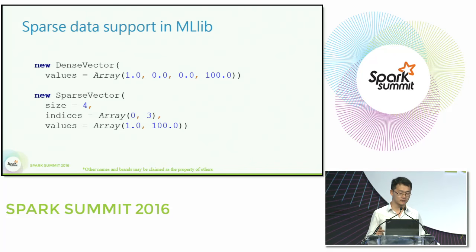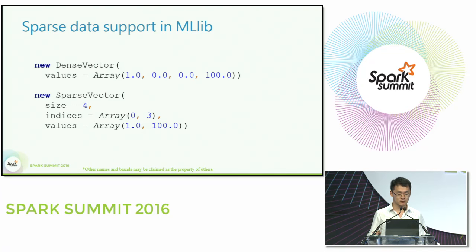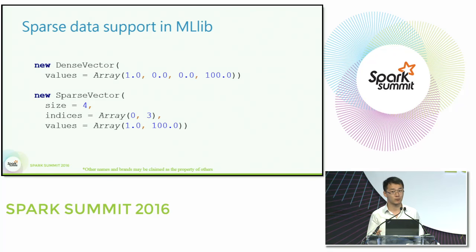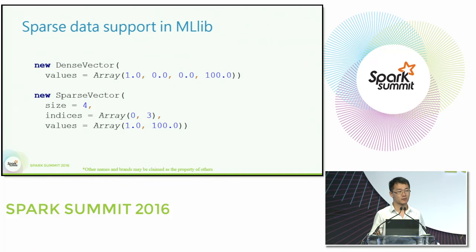Currently there are two kinds of vectors supported in MLlib. One is a dense vector — you can imagine it as an array of doubles — which provides fast random access and efficient updates, but the primary concern is memory consumption since it lists all elements even if many are zero. The other format is a sparse vector, which focuses only on non-zero elements. For example, if only 1 and 100 are non-zero, the sparse vector only records the indices and values of those two numbers. However, sparse vectors have shortcomings: it's hard to insert or delete elements without copying arrays, and random access requires a binary search on the indices array.